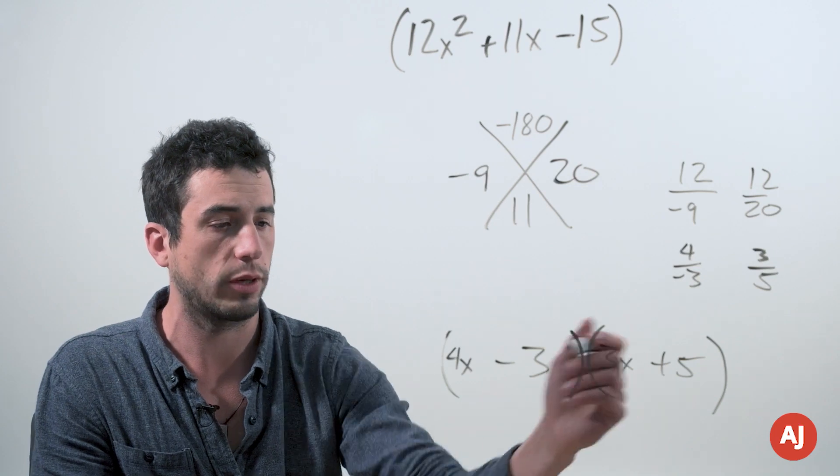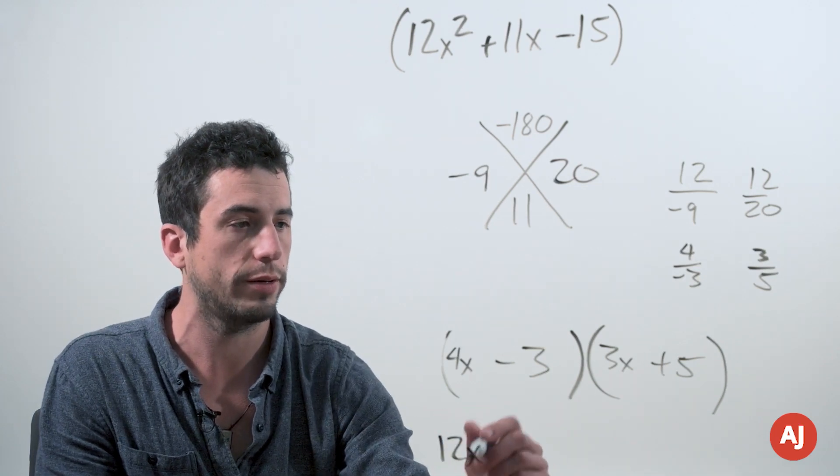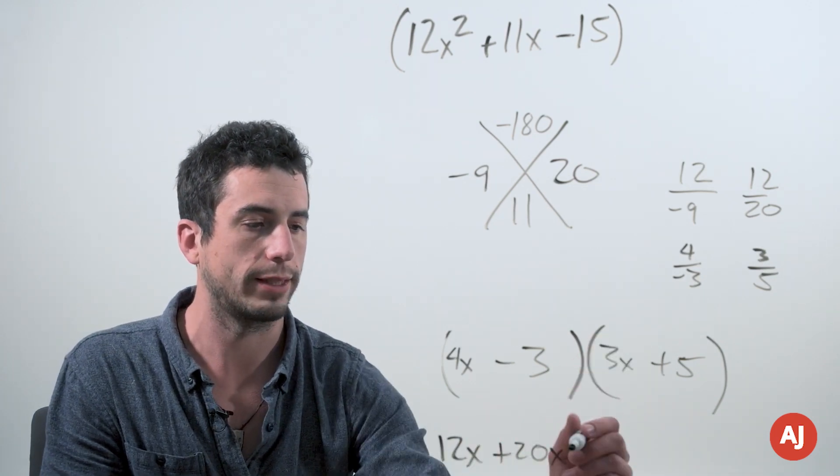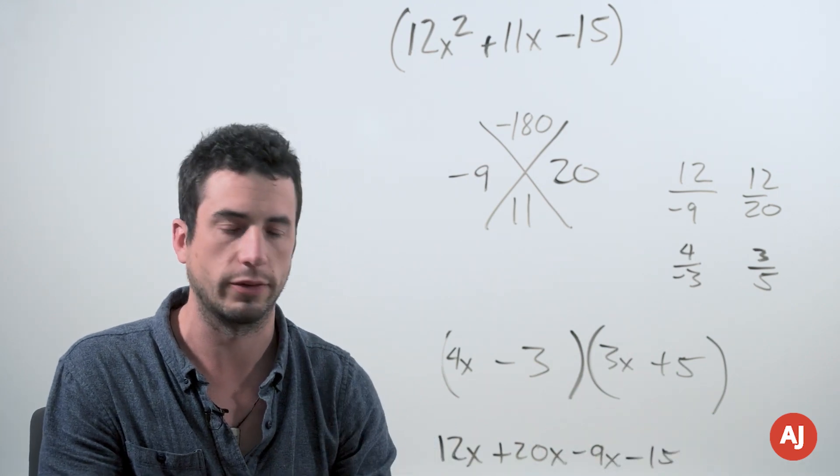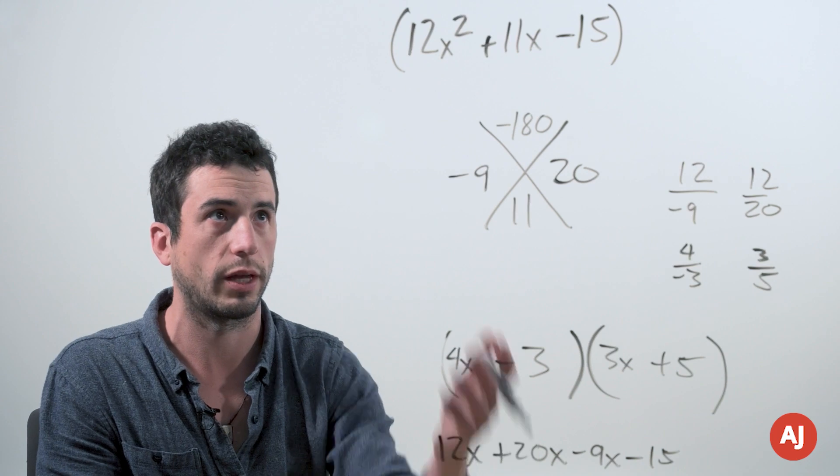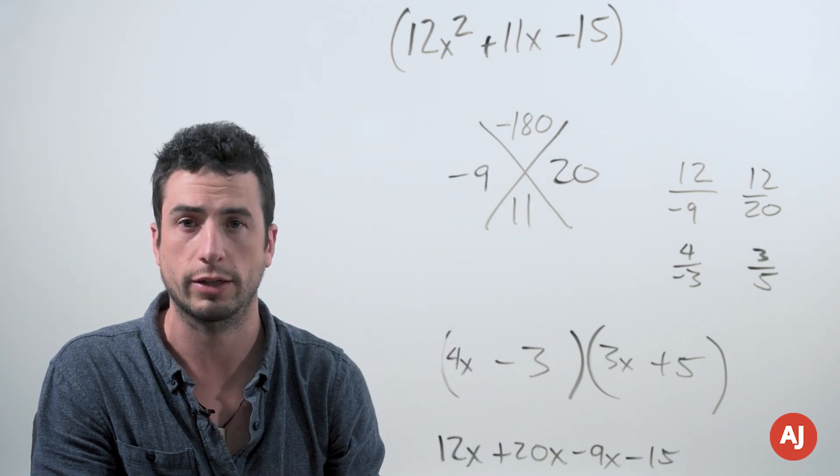To prove this, we can do a quick foiling step. Distribute out here, we get 12x squared plus 20x minus 9x minus 15, and if we simplify that middle term, it does in fact become positive 11. So we just kind of double checked and proven that we were in fact correct.